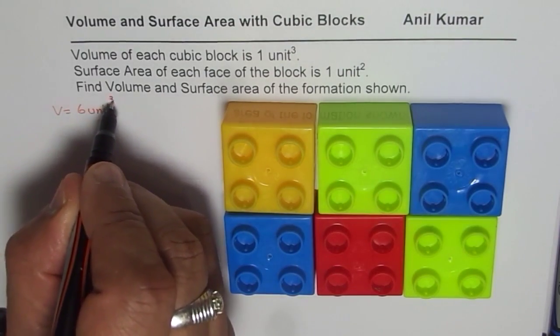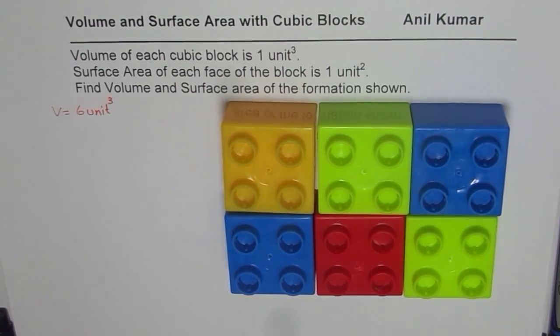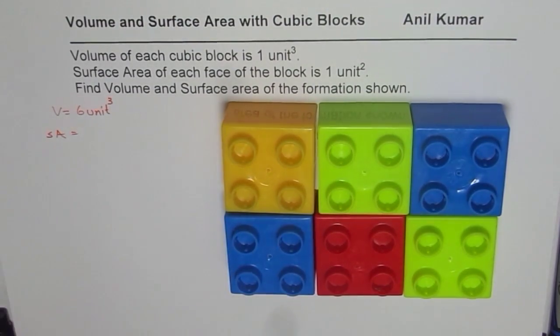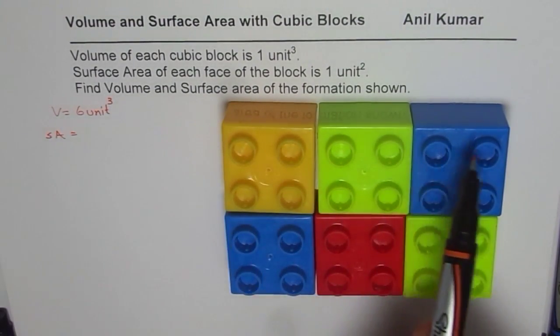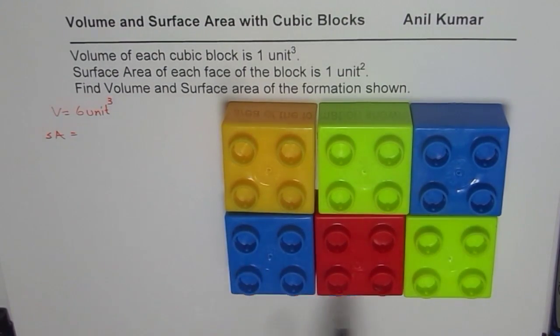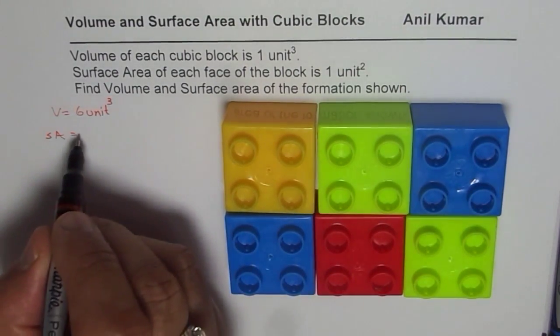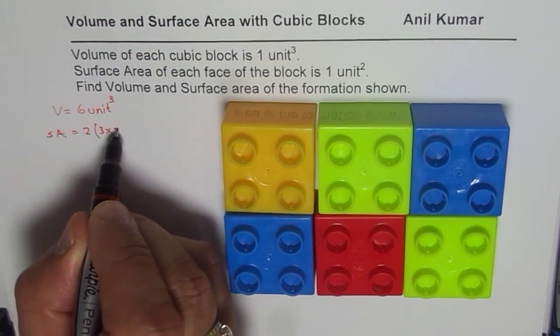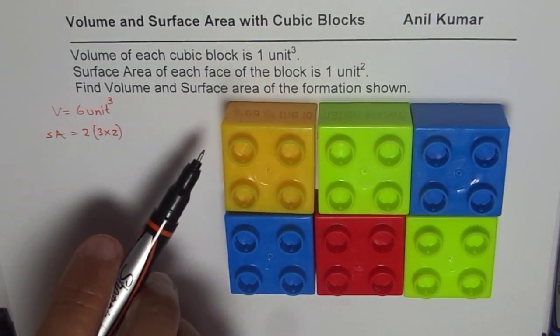So that is not a problem. Surface area, how do we calculate surface area? To find surface area we can find area of the top. So it is 3×2, right? And we have two of those: 3×2 is 6. So we have two of 3×2, that is top and bottom.